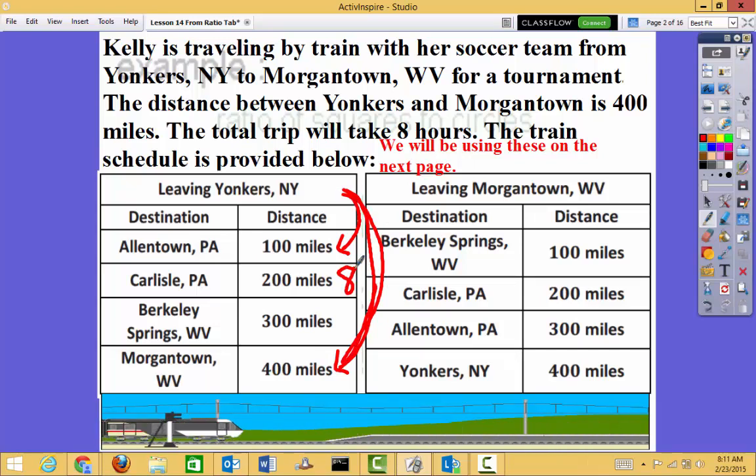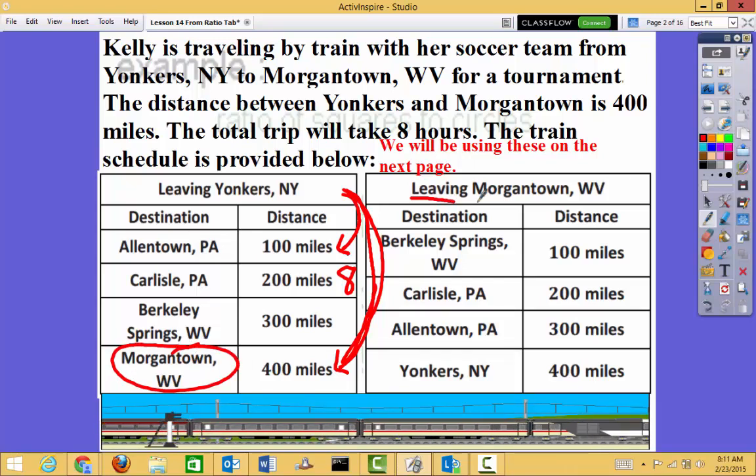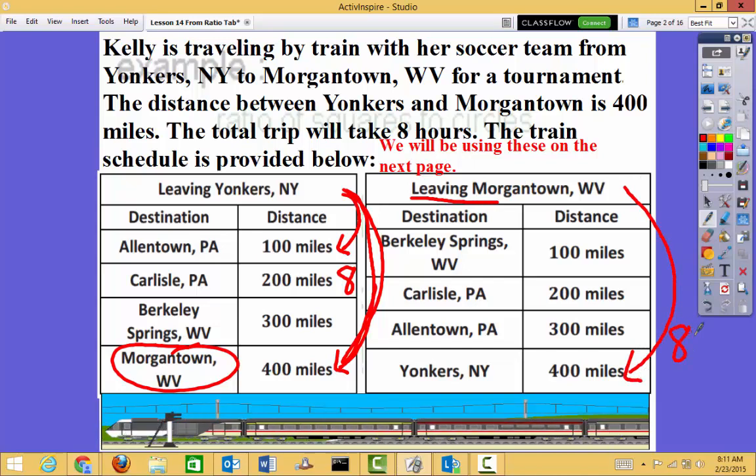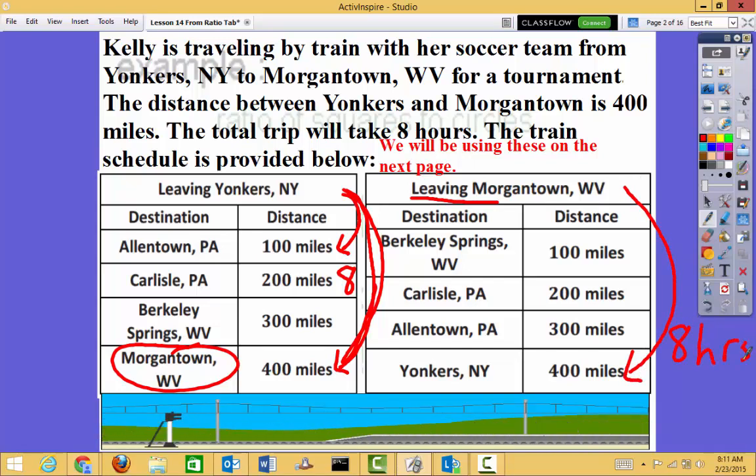And then, since they have to return, it's going to be the same thing. When they leave Morgantown, back to Yonkers, New York, that's also going to take 8 hours. It's going to be the exact same thing but in the opposite direction.